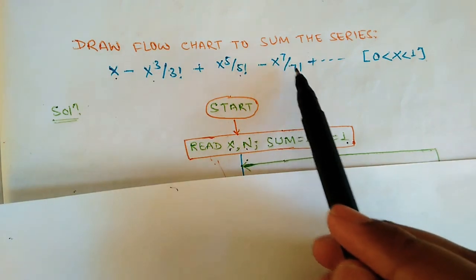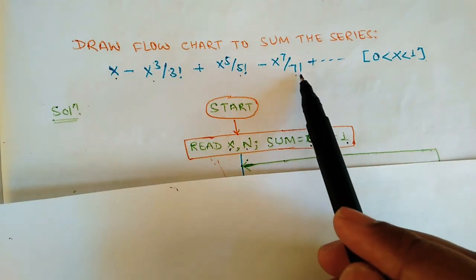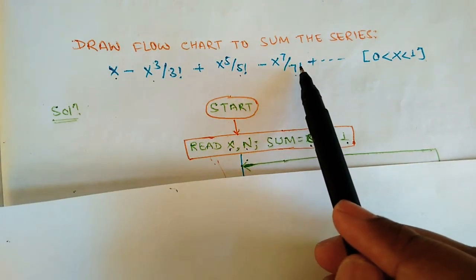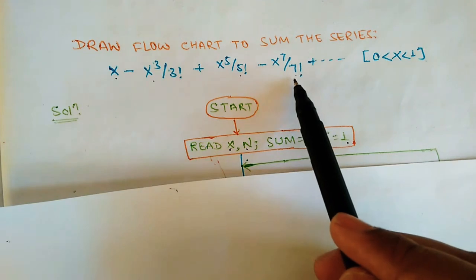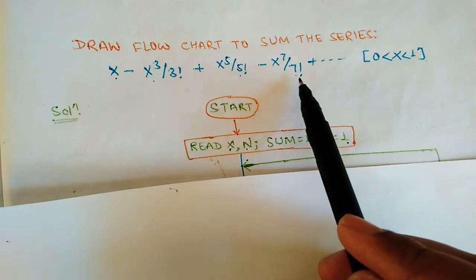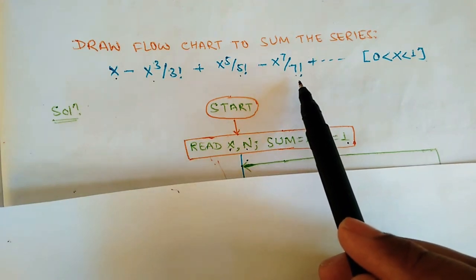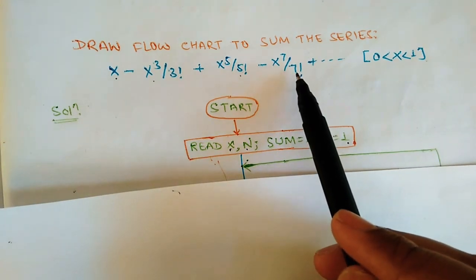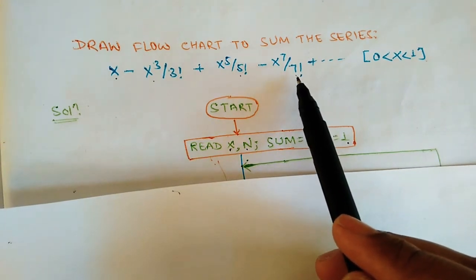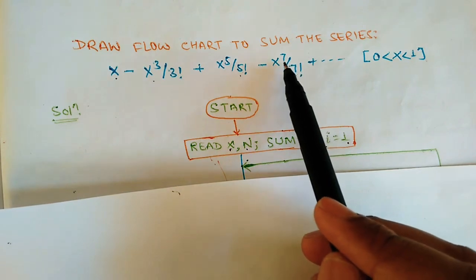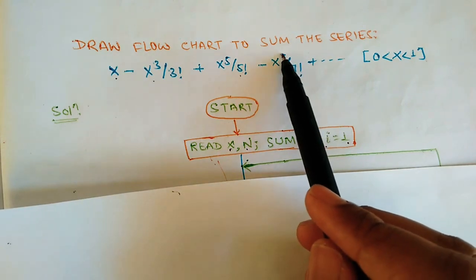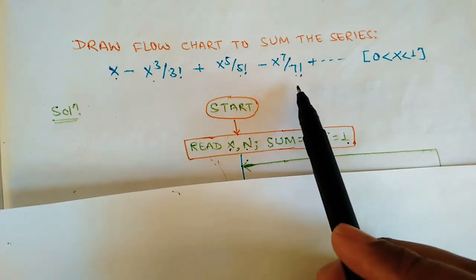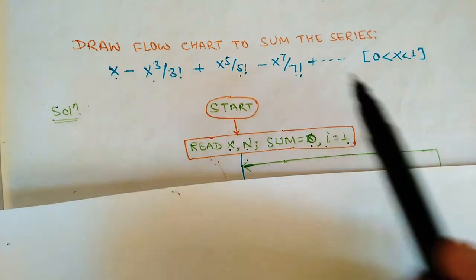For example, x to the power 7 divided by 7 factorial — so we need to calculate the factorial. The power of the numerator and the denominator are the same number. Focus on the power of the number; the denominator is that same number.